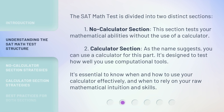The SAT Math Test is divided into two distinct sections. The No Calculator Section tests your mathematical abilities without the use of a calculator. The Calculator Section, as the name suggests, allows you to use a calculator — it's designed to test how well you use computational tools. It's essential to know when and how to use your calculator effectively, and when to rely on your raw mathematical intuition and skills.